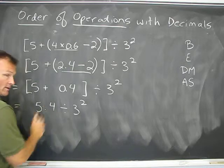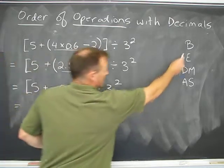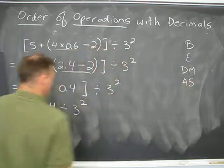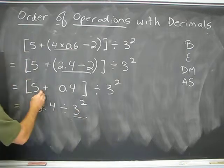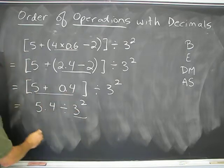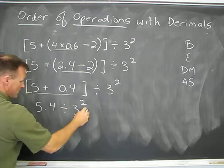You don't do 5.4 divided by 3. You have to do the exponent before division. So the exponent, 3 squared—and by the way, I like to underline as I go what I'm doing—so 3 squared is equal to 9.